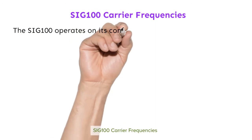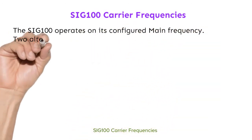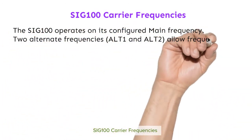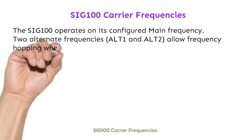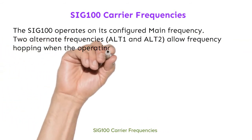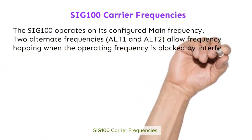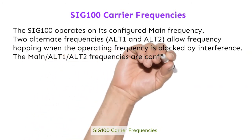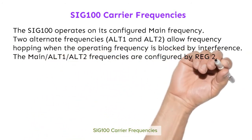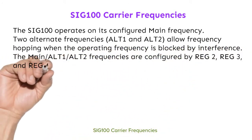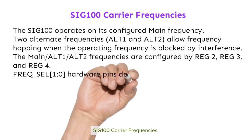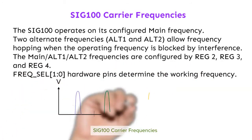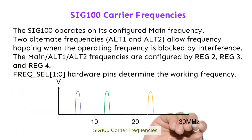SIG100 carrier frequencies: the SIG100 operates on its configured main frequency. Two alternate frequencies, ALT1 and ALT2, allow user-controlled frequency hopping when the operating frequency has interference. The main, ALT1, and ALT2 frequencies are configured by REG2, REG3, and REG4.